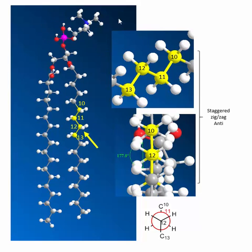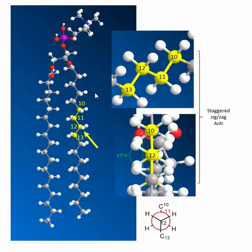This is a typical phospholipid molecule. You can see this end of the molecule is very polar — this is a polar head group — and there are two nonpolar tails coming off of it. These are just long alkyl chains drawn in a zigzag fashion.